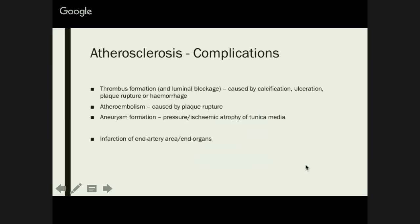Complications of atherosclerosis: thrombus formation caused by ulceration or plaque rupture. Atheroembolism — if your plaque actually ruptures and goes further down, it can essentially result in an embolus. Aneurysm formation is common secondary to atherosclerosis — pressure or atrophy of your tunica media results in a bulging vessel wall. You can also result in infarction of end arteries or end organs, which is pretty much how a myocardial infarction comes about.